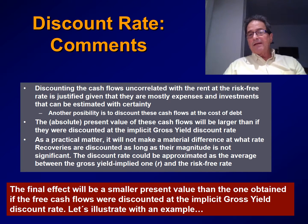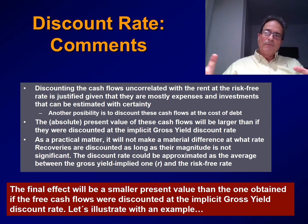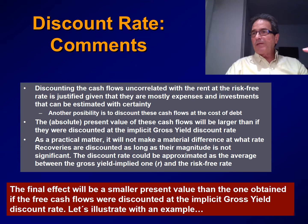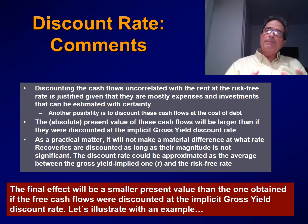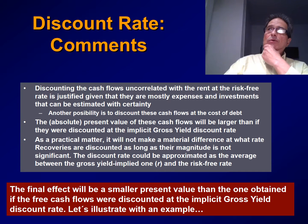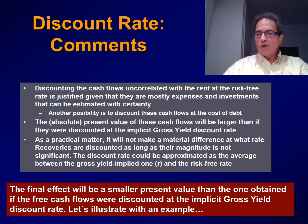The final effect will be a smaller present value than the one obtained if the free cash flows were discounted at the implicit gross yield rate. Because we are discounting all the outflows at a lower rate, the present value of the outflows will be bigger, so the net present value obtained will be smaller. Under the proposed approach, the net present value of the property will be smaller than the net present value obtained if we discount the free cash flows at the gross yield implied rate, as is usually done.